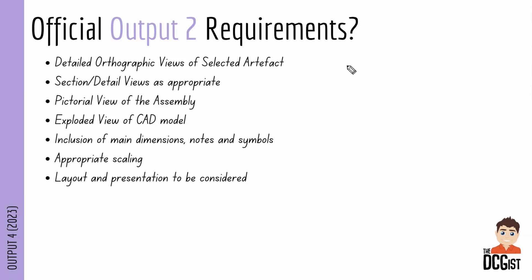Looking at the requirements more carefully, you'll be putting in detailed orthographic views of your selected artifact. You're going to have section and detail views where appropriate — and we want both to make sure we have all our bases covered. You'll have a pictorial view of the assembly and an exploded view of the CAD assembly model. Note that you can only do exploded views of assemblies, not of parts. Then you'll have inclusion of main dimensions, notes, and symbols, appropriately scaled views, and a well-considered layout and presentation.